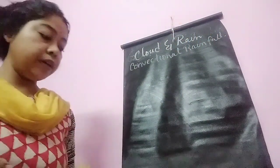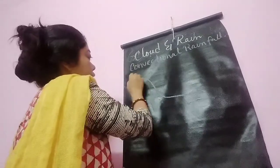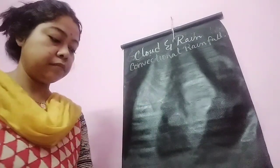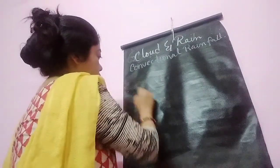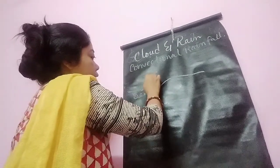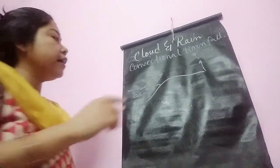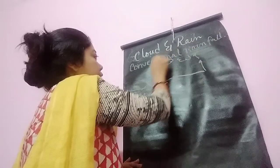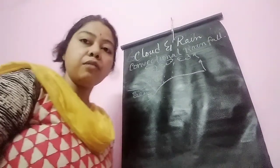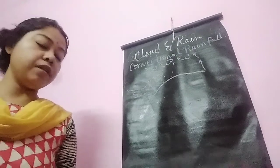Convectional rainfall occurs from a water body. From the water body the air starts to evaporate and rises up. As it goes into the higher atmosphere, it comes in contact with the cold air where condensation happens, and after condensation clouds form. These clouds become too heavy and come down on the earth as rainfall. It is called convectional rainfall.